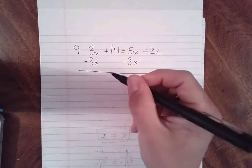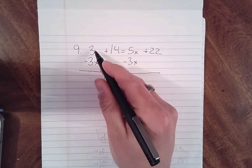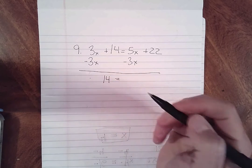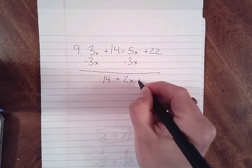Again, keeping it nice and orderly is the best thing to do. I have a positive 14 still over here, this gives me 0. 3x minus 3x is 0. 5x minus 3x is 2x plus 22.